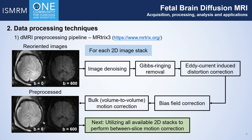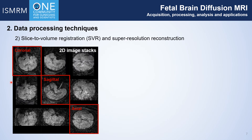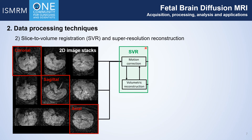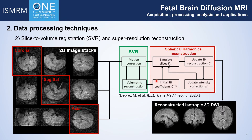After that, we need to correct for inter-slice motion. We can first utilize all available 2D image stacks, regardless of their diffusion directions, to restore a motion-free 3D volume. This is done by iterative slice-to-volume registration and super-resolution volume reconstruction. A spherical harmonics model is then initialized using the 3D volume. The diffusion-weighted slices, along with their motion parameters and gradient table, are fitted to the model to reconstruct all diffusion-weighted volumes with the correct gradient table.